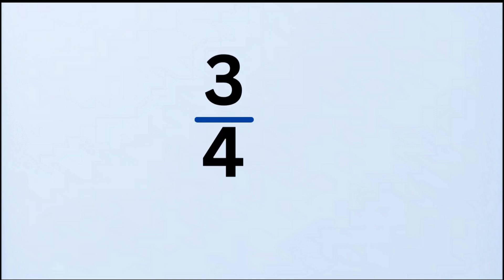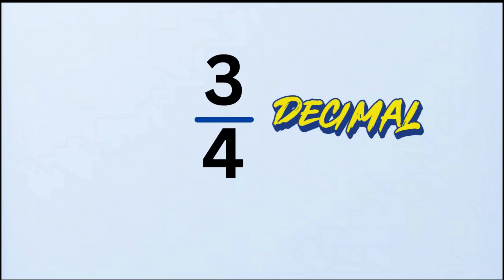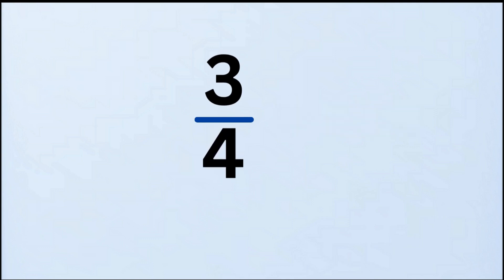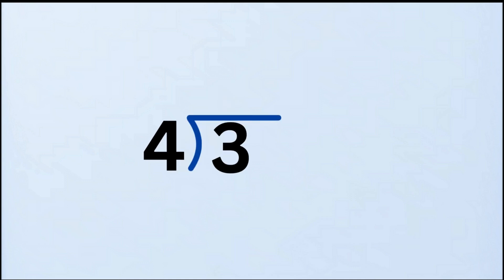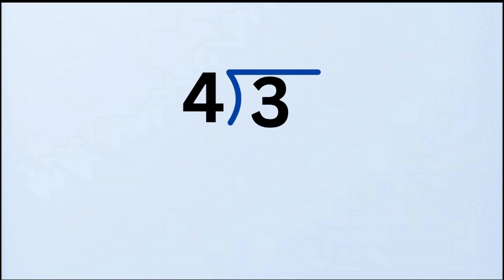Imagine we want to convert three-fourths into a decimal. The key strategy is to use our traditional division symbol. We place the four outside — that's our divisor — and the three inside — that's our dividend.